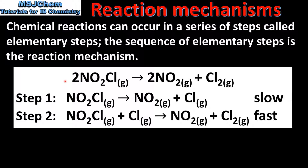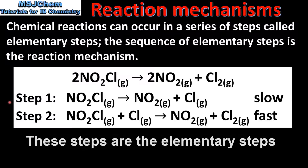In this reaction, nitryl chloride reacts to form nitrogen dioxide and chlorine gas. Here we can see a proposed reaction mechanism for the reaction. The reaction mechanism is composed of two steps. In the first step, nitryl chloride reacts to form nitrogen dioxide and an atom of chlorine. In the second step, nitryl chloride reacts with a chlorine atom to form nitrogen dioxide and a molecule of chlorine.